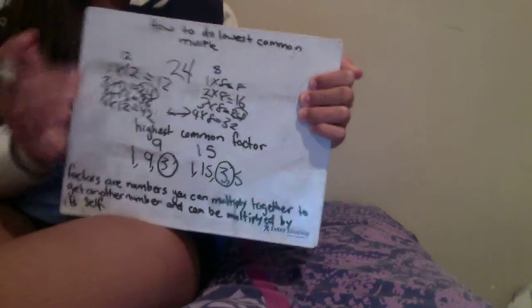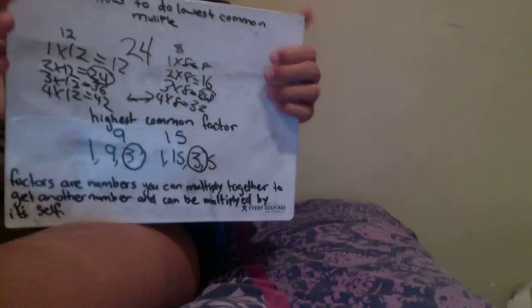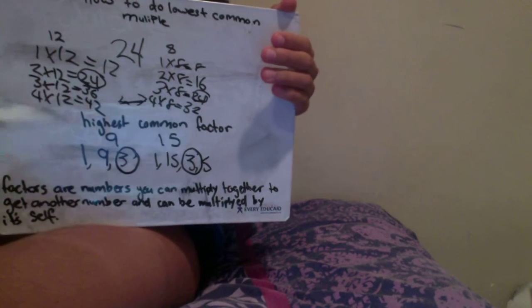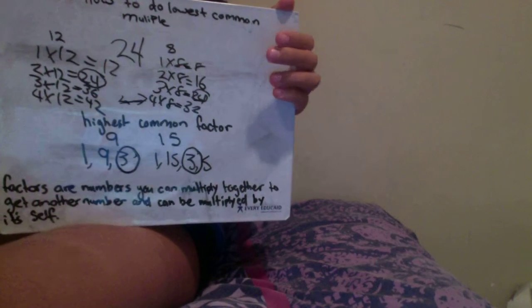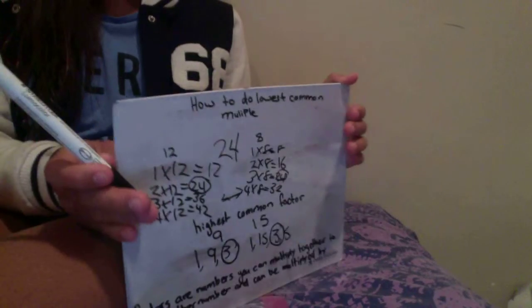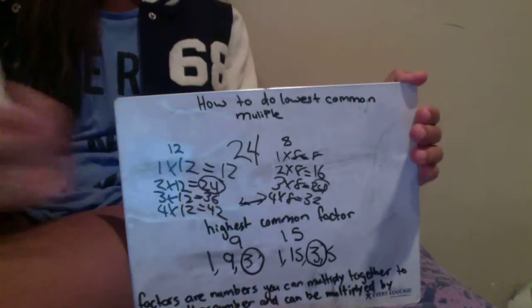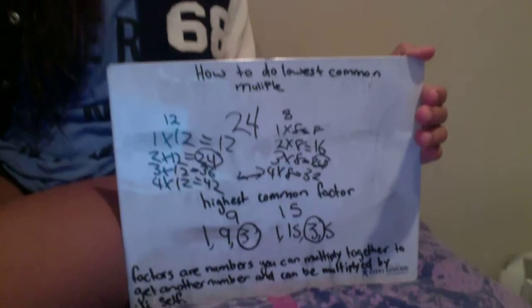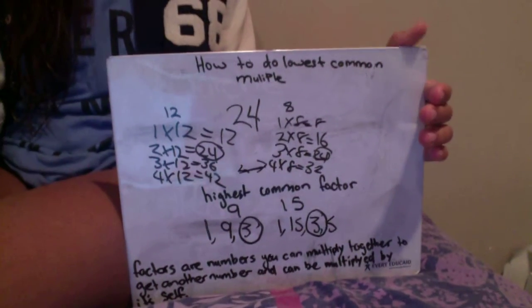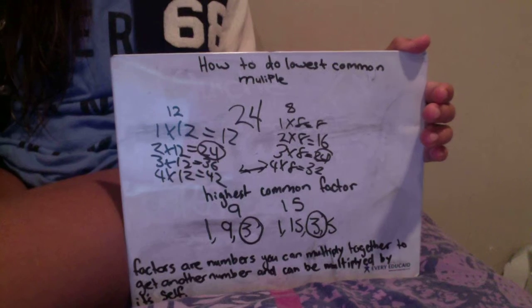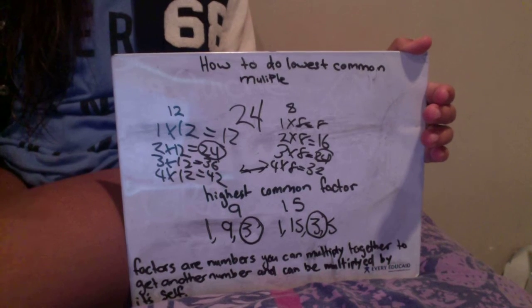So that is how to do the lowest common multiple and highest common factor. Thanks for watching.